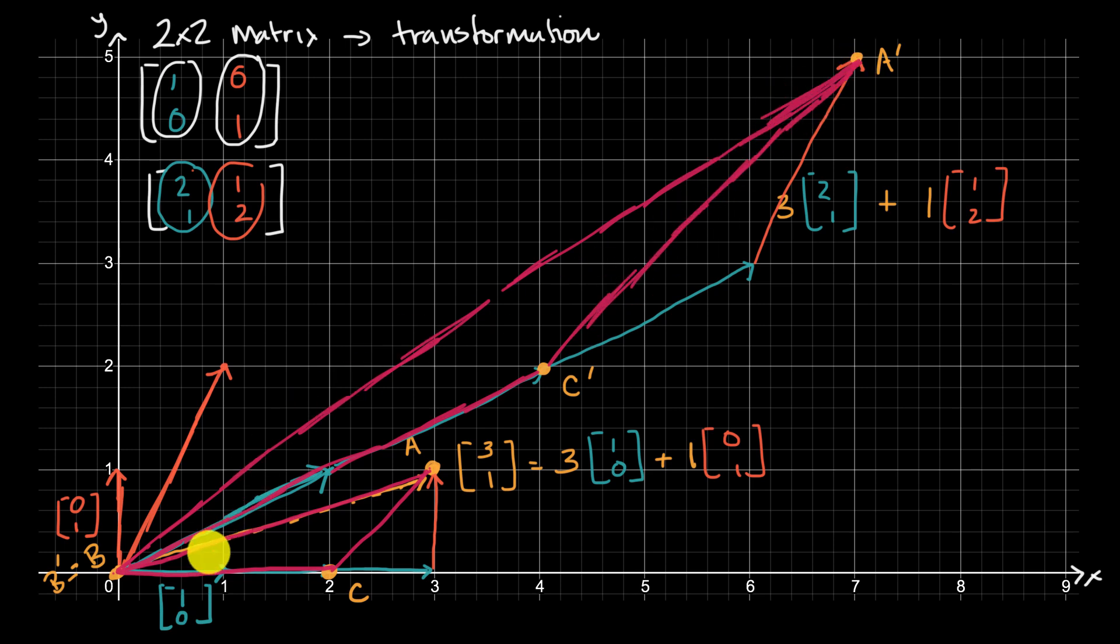Now you might be saying, Sal, how do you know that the lines map onto other lines? How do you know this transformation didn't all of a sudden make this line squiggly or zigzag? And that's one of the interesting properties of the type of transformation we're talking about. A two by two matrix will represent a linear transformation. And there's two ways to think about it in this context. A linear transformation will always map the origin onto itself. And it will always map a line onto another line. It won't turn that line into a curve, or it won't make it zigzag somehow.